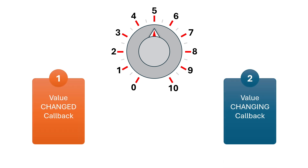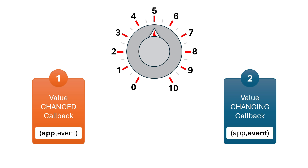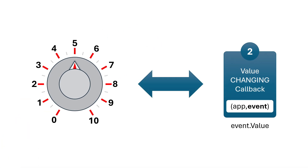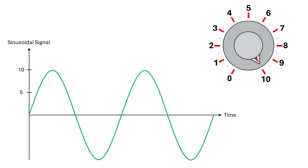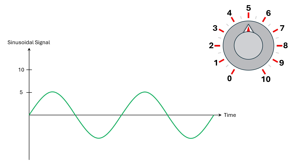The knob has two types of callback functions: the Value Changed callback and the Value Changing callback. Both have two arguments: the app argument and the event argument. For Value Changed, we use app.Knob.Value to get the value. For Value Changing, we use event.Value. If we want to see continuous change as we move the knob, we have to use the Value Changing callback. So as we change the knob value, we should see the sinusoidal signal gradually change.